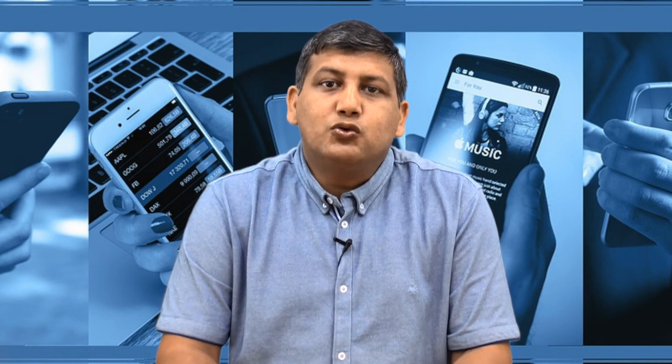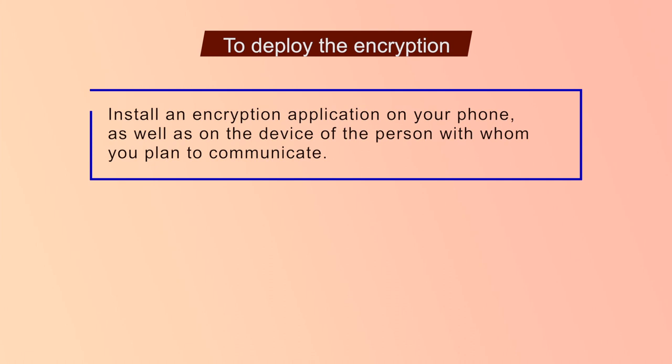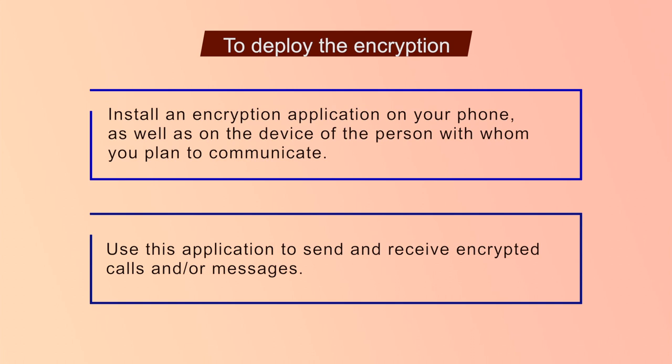Typically, encryption of voice communications that travel through the mobile phone network is relatively weak. There are inexpensive techniques which third parties can use to intercept your written communications or to listen to your calls if they are in proximity to the phone and can receive transmissions from it. Mobile phone providers have access to all your voice and text communications. It is currently somewhat technically cumbersome to encrypt phone calls so that even the mobile phone providers can't eavesdrop. However, these tools are expected to become cheaper soon. To deploy encryption, you would first have to install an encryption application on your phone as well as on the device of the person with whom you plan to communicate, then use this application to send and receive encrypted calls or messages. Encryption software is currently only supported on a few models of smartphones.